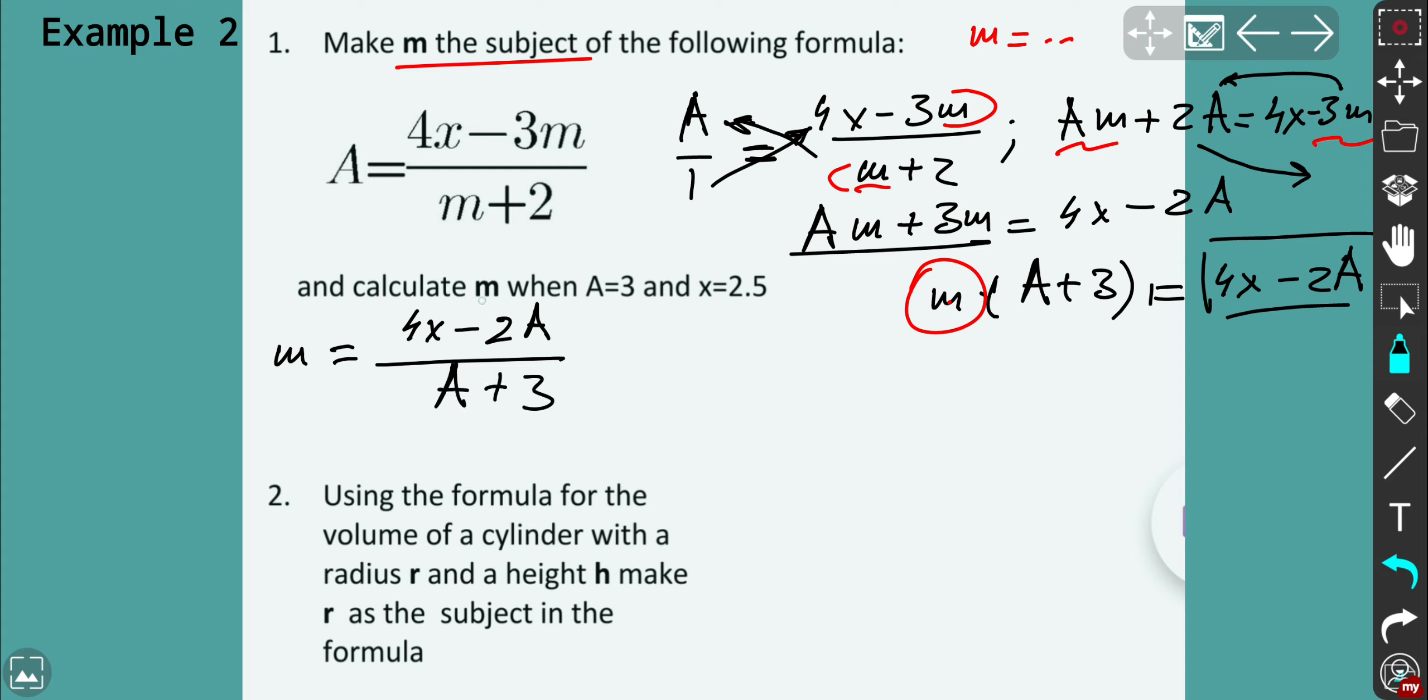All right, we need to calculate M when A equals 3 and x equals 2.5. Let's do that. So we just plug the values using calculator. So first of all, I just write 4 times 2.5. I plug x 2.5 right there, and I subtract 2 times 3. And then I divide it by A, which is 3 plus 3. Now you may take a calculator. If not, you can do it probably mentally. I'll show you how to do it mentally. 4 times 2.5, you'll get 10. 10 minus 2 times 3, you'll get 10 minus 6, it's 4. And then 3 plus 3 is 6. Now you've got a fraction 4 over 6 or 2 over 3.